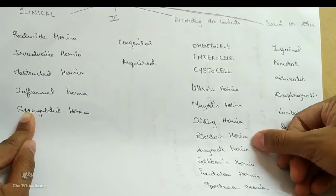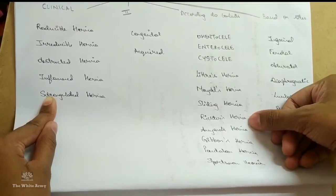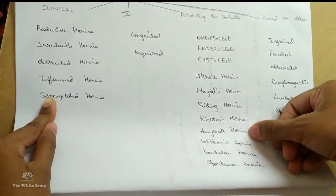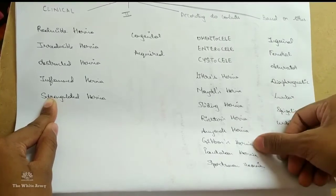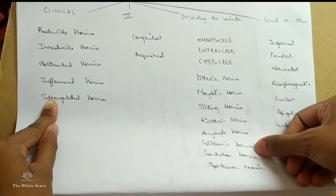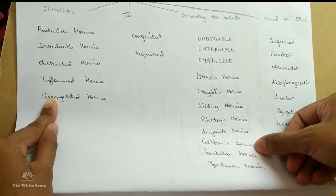Richter's hernia, part of the loop is included as a content. Amyand's hernia, appendix is a content. Gibbon's hernia, inguinal hernia plus hydrocele.